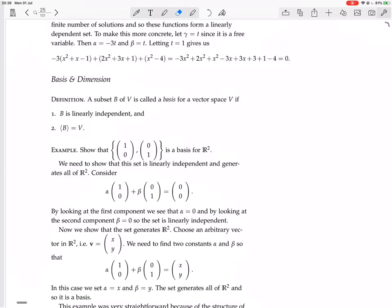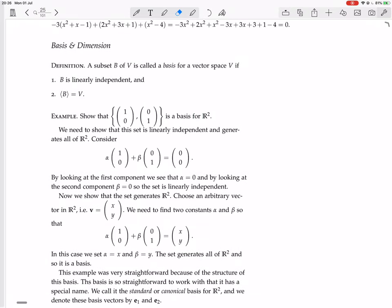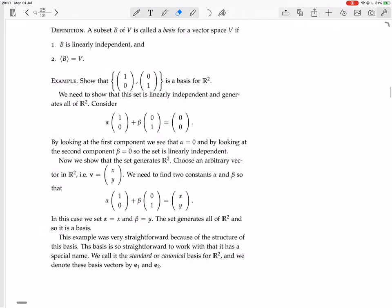We have an example. Show that {(1,0), (0,1)} is a basis for R². We need to show that this set is linearly independent and generates all of R². That means that the set of all linear combinations of these two vectors must equal R².